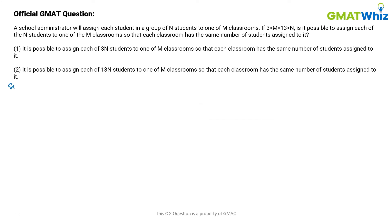In this question, a school administrator will assign each student in a group of n students to one of m classrooms. We are given the range 3 < m < 13 < n. It makes sense to split this inequality and write it as 3 < m < 13 and m < n, just to have a clear idea of the range.